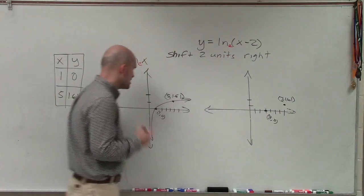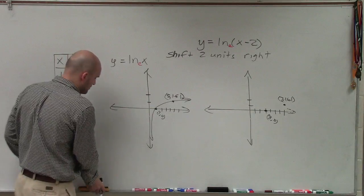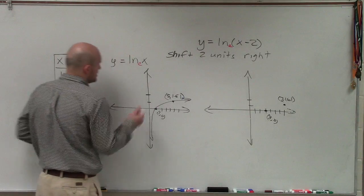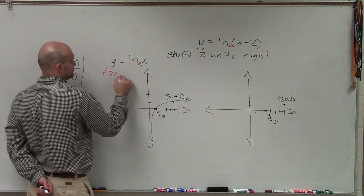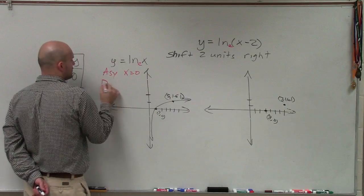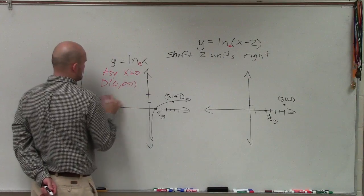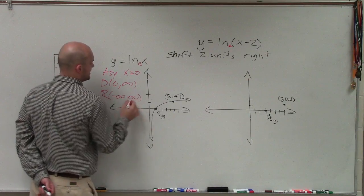And the next thing that's also important is when we look at our general graph, we need to determine again what the asymptote is, domain, and range. So the asymptote of my parent graph of a natural logarithm is x equals 0. And the domain is from 0 to infinity, and the range is from negative infinity to infinity.